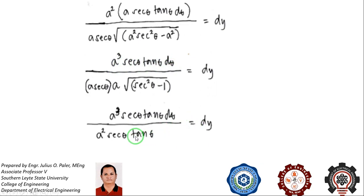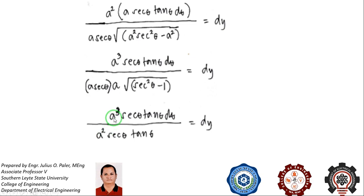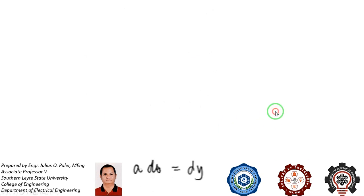Now we make cancellations. Secant theta in the numerator and denominator cancel. Tangent theta in the numerator and denominator cancel. We have a cubed over a squared, so what remains on the left side of the equation is a d theta, equal to dy.